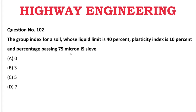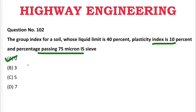Next question: The group index of soil whose liquid limit is 40%, plasticity index is 10%, and percentage passing 75 microns is — A: 0, B: 3, C: 5, D: 7. The correct answer is A, 0.